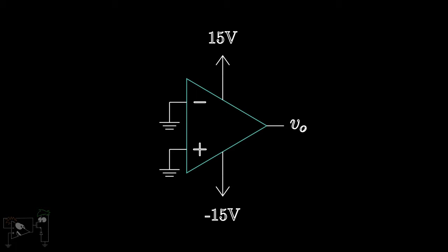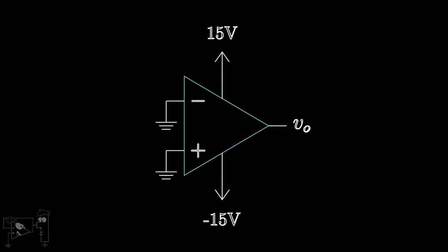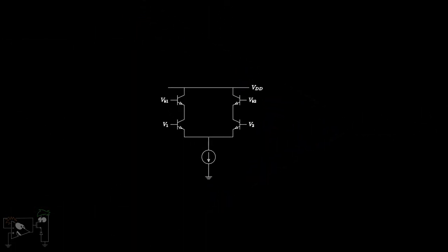To understand why we get this offset voltage, we need to take a look at the internal structure of the op-amp. The first stage of an op-amp consists of a differential amplifier.